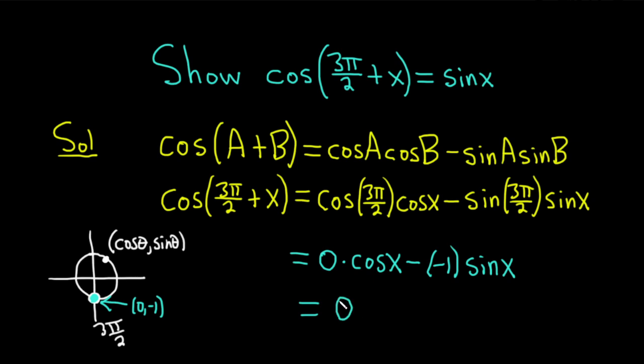This is equal to 0. And then negative and negative is plus, so plus sine x. That's just equal to the sine of x.